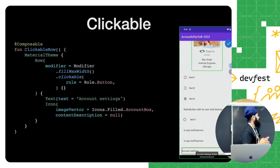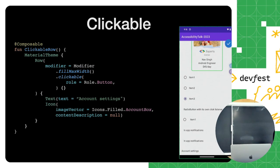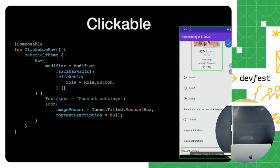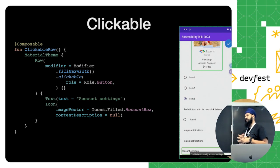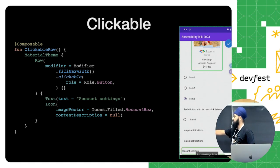The last modifier is `clickable` — same approach, set the click label, set the role (in this case `Role.Button`), and the two components are processed together. One cool thing about all these modifiers — selectable and toggleable both use clickable internally — is that when you use clickable, Compose automatically ensures the touch target meets minimum requirements, setting 48 by 48 dips. Even without explicitly setting a size on the component, it will meet the 48dp accessibility requirement.